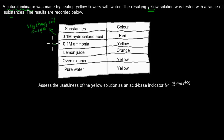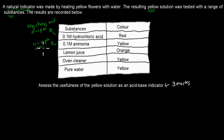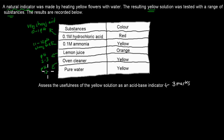Ammonia is a relatively strong base, so this ammonia solution would have a pH of around 11 to 12 — a moderately strong base. Lemon juice would have a pH of around 2 to 3. Oven cleaner tends to have a pH of around 12 to 13. And pure water is obviously neutral, so it has a pH of around 7. You should figure out what kind of pH range these substances would be in.